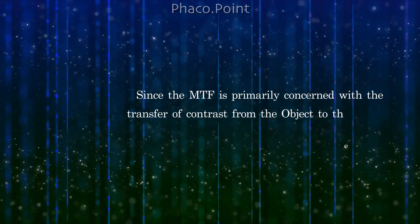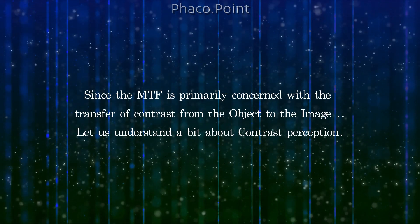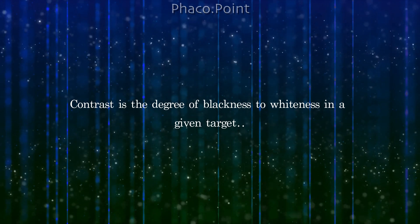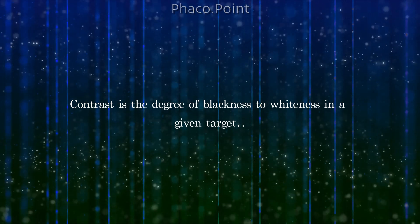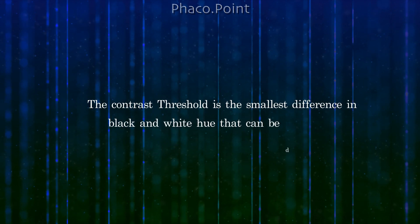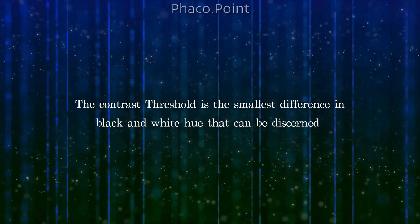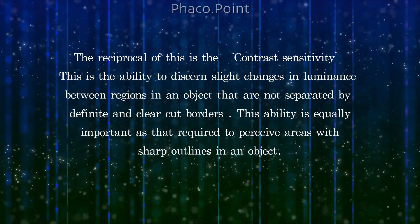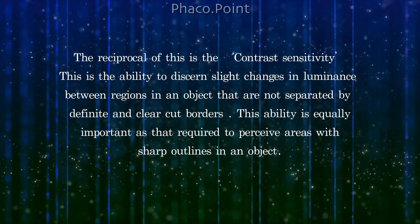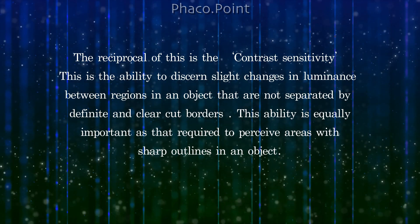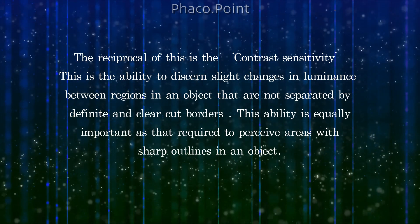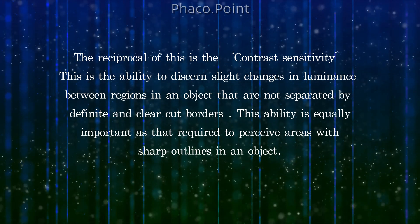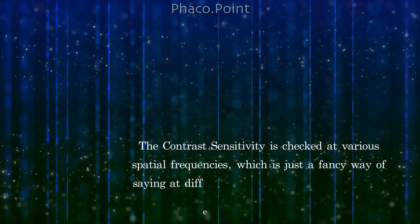Since the MTF is primarily concerned with the transfer of contrast from object to image, let us understand a bit about contrast perception. Contrast is the degree of blackness to whiteness in a given target. The contrast threshold is the smallest difference in black and white hue that can be discerned by the human eye. The reciprocal of this is called the contrast sensitivity — the ability to discern slight changes in luminance between regions not separated by definite and clear-cut borders. This ability is equally important as that required to perceive areas with sharp outlines in an object.